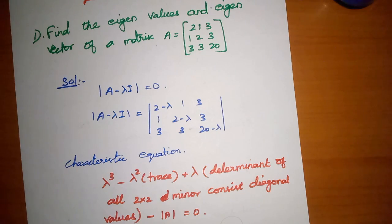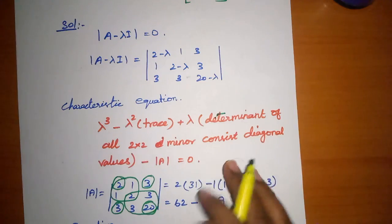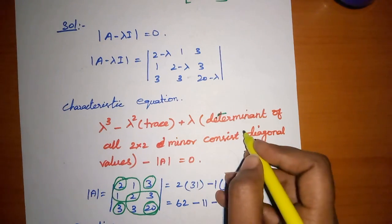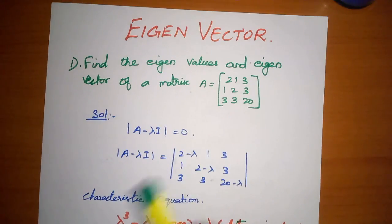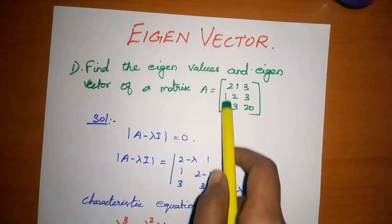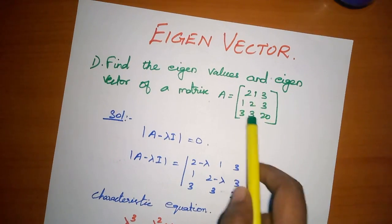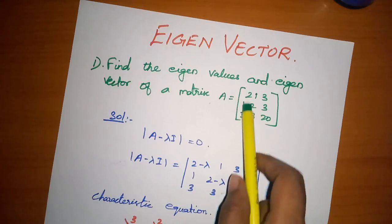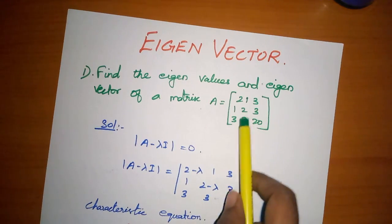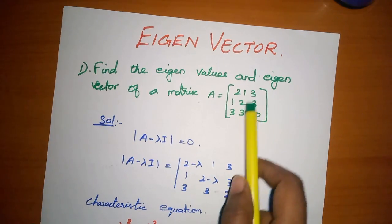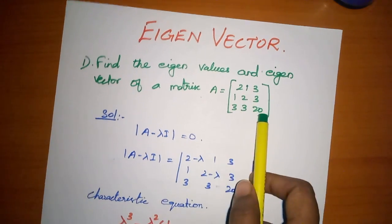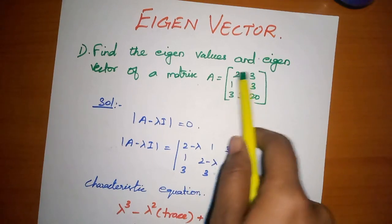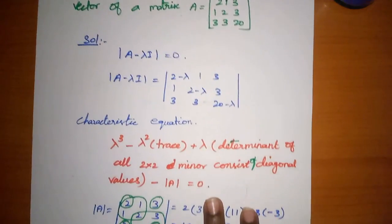Plus lambda into the determinant of all 2x2 minors of diagonal values. So for the diagonal values, we eliminate to get 2x2 minors. If we eliminate the first diagonal element, the minor is the 2x2 submatrix remaining. We do this for each diagonal element, giving us three minors whose sum we compute.